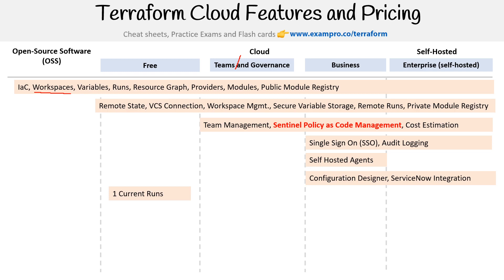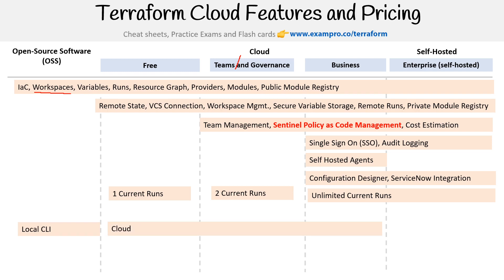In terms of how many concurrent runs you can have — this is very important because it's a bottleneck for your infrastructure. On the free tier you can have one concurrent run per workspace; on teams you can have two; and at the business level and beyond it's unlimited concurrent runs. Interaction is through the local CLI for OSS, cloud-triggered execution for the cloud tier, and on a private machine for self-hosted.